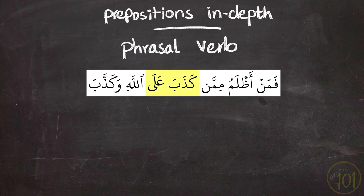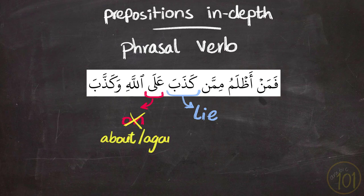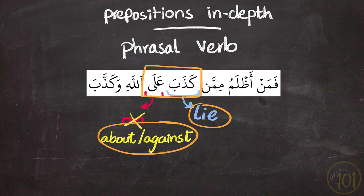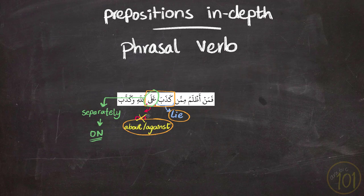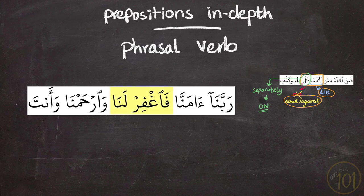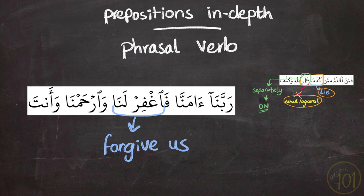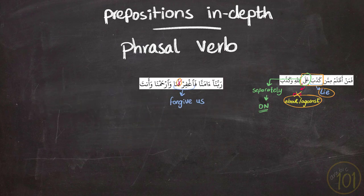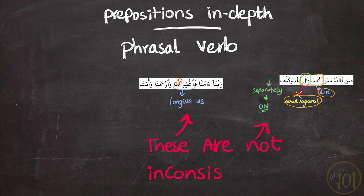So they are often dropped or changed to a completely different preposition when translated to another language. For example, كَذَبَ عَلَى — كَذَبَ means 'lie' but it also contains the preposition عَلَى, which normally means 'on'. But in English we don't say 'lie on', so you would translate it as 'lie about' or 'against'. This doesn't mean عَلَى means 'against' or 'about' — rather the phrasal verb as a whole is translated that way. The main translation for عَلَى remains 'on'. Another phrasal verb, فَاغْفِرْ لَنَا, is translated as 'forgive us', so the preposition لَ is completely dropped. These seeming inconsistencies in translation will disappear when we start learning these phrasal verbs along with their prepositions.